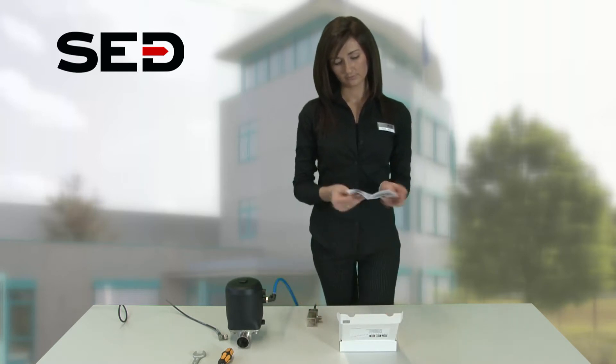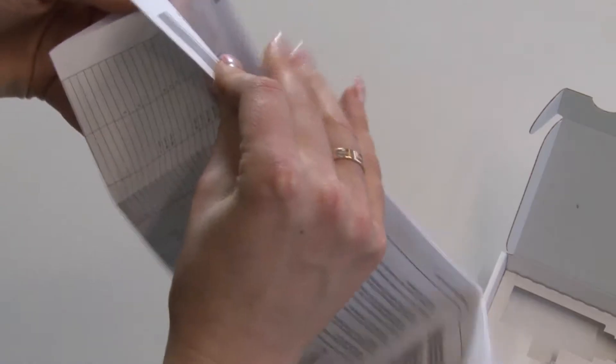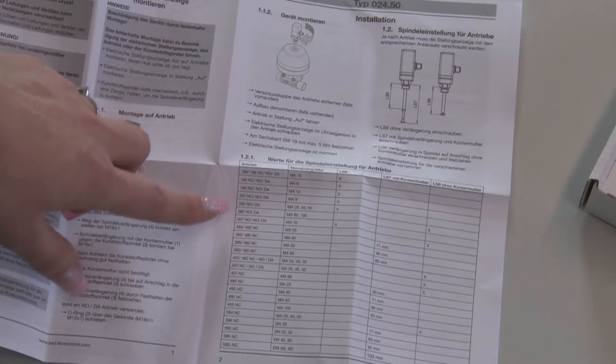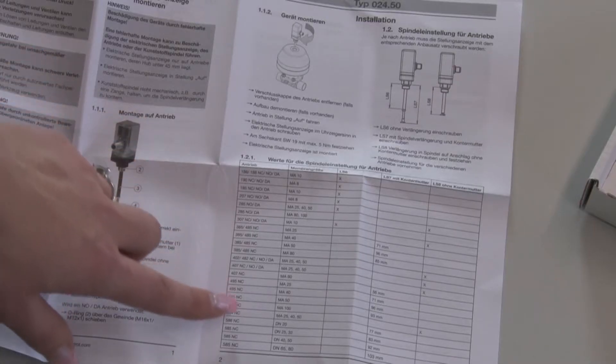Check the length of the spindle for your actuator based on the list 1.2.1 in the quick instruction guide. This is only necessary for thread version M16X1 article code 024.50.160.